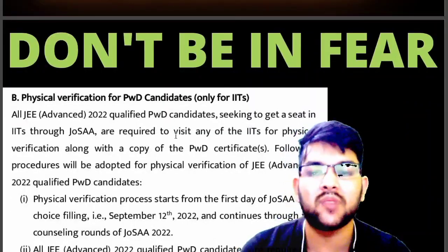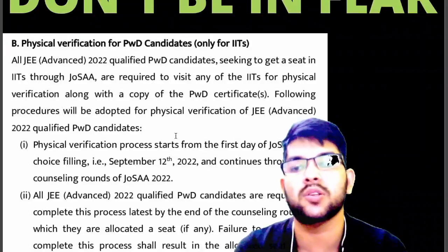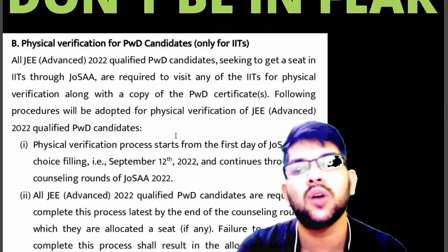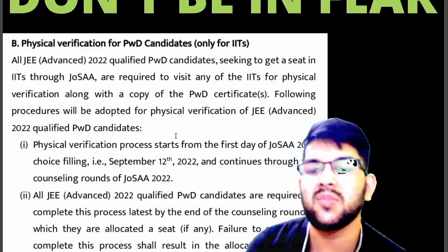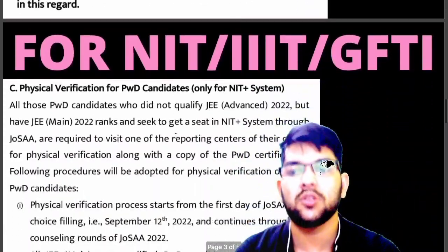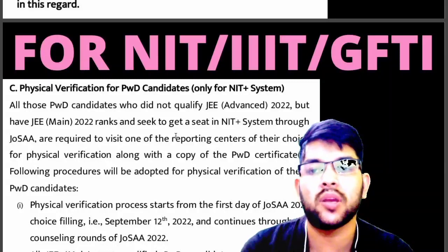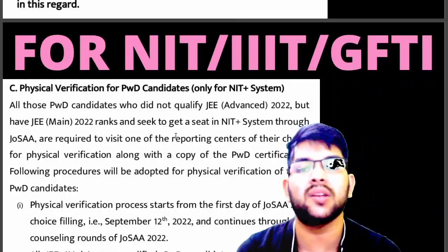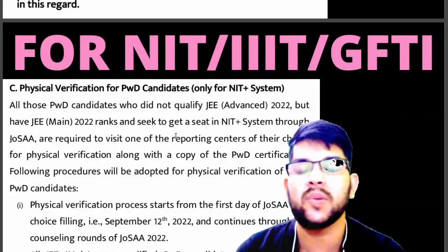The dates for physical verification are from September 12 to 21. If you miss this window, you can still do it after getting a seat — up to the last date of document upload, you can go to the allotted college for physical verification. You cannot do it from home; you must go to the college. Three things are required: the student themselves, the original PWD certificate, and a government-issued ID card such as Aadhaar, voter ID, or PAN card.